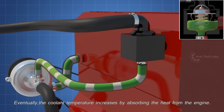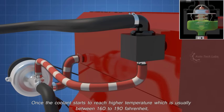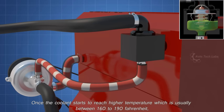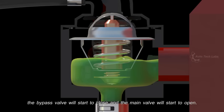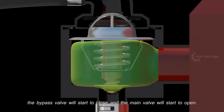Eventually, the coolant temperature increases by absorbing the heat from the engine. Once the coolant starts to reach higher temperature, which is usually between 160 to 190 Fahrenheit, the bypass valve will start to close and the main valve will start to open.